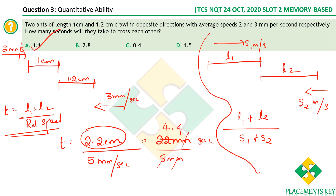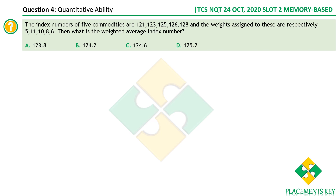Please treat this as an equivalent of a train-based question: two trains traveling in opposite directions take so much time to cross each other completely. Now the next question: the index numbers of five commodities are 121, 123, 125, 126, 128 with weights 5, 11, 10, 8, 6 respectively. What is the weighted average?